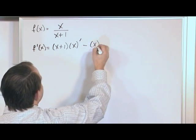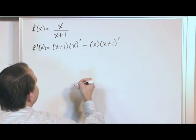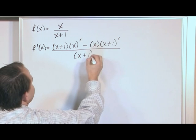Minus the top times the derivative of the bottom - put that mark to remind me to take that later - over the bottom squared.